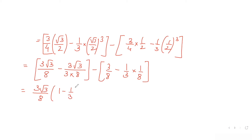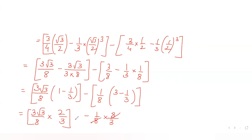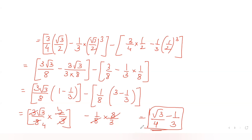Simplifying the first bracket: taking 3√3/8 common, we get 3√3/8 · (1 - 1/3) = 3√3/8 · 2/3 = √3/4. For the second bracket: taking 1/8 common gives 1/8 · (3 - 1/3) = 1/8 · 8/3 = 1/3. So the final answer is √3/4 - 1/3.